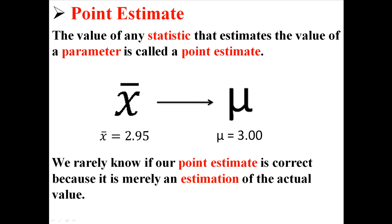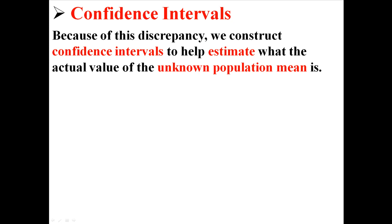We rarely know if our point estimate is correct because it's just an estimation of the actual value. Because of this discrepancy between what we estimate and the actual value, we construct confidence intervals to help estimate what the actual value of the unknown population mean is.